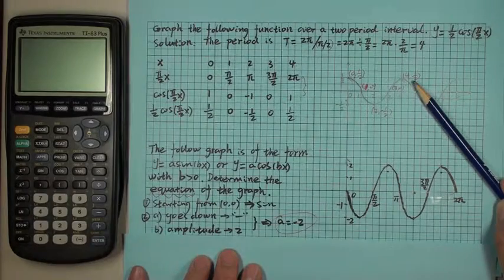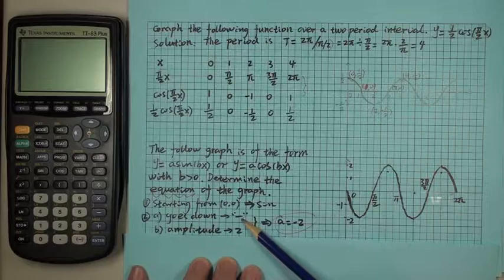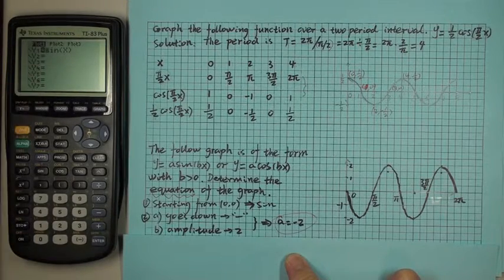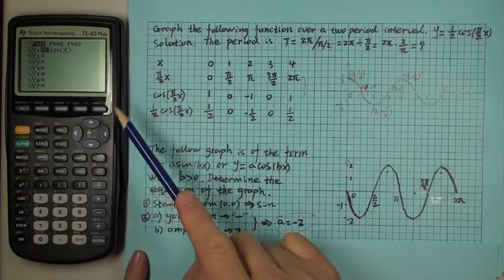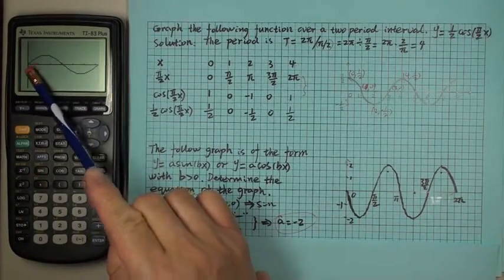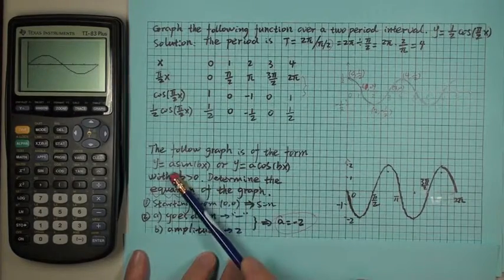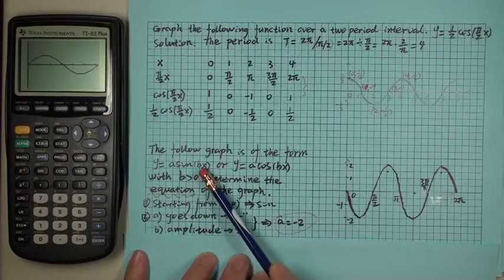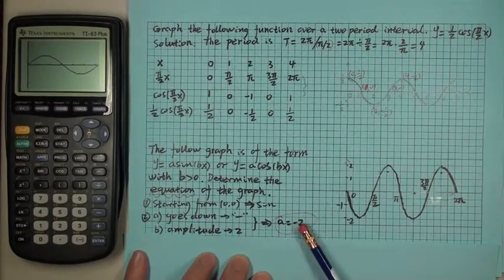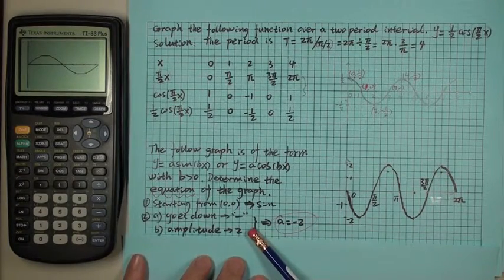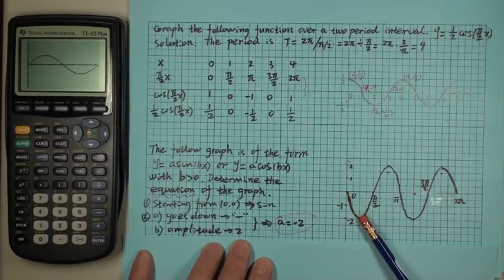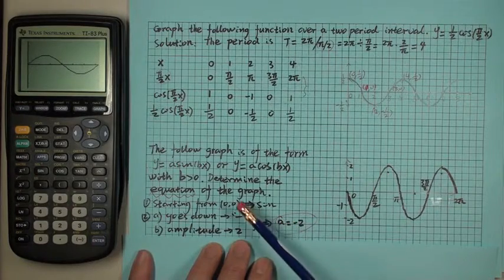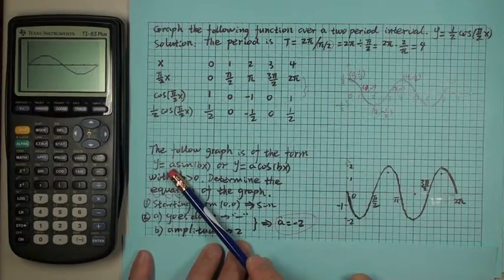The second thing to notice is that the graph goes negative first. We know sine x normally goes positive first, so this graph is flipped — meaning A will be negative. The amplitude is 2, since it reaches a lowest of negative 2 and a highest of 2. So A equals negative 2.